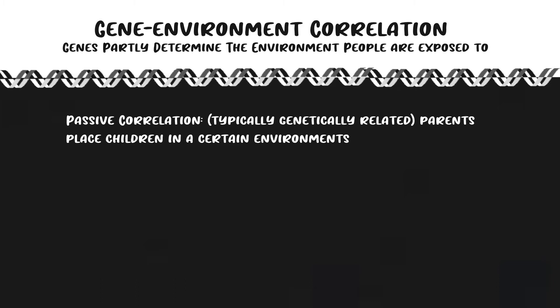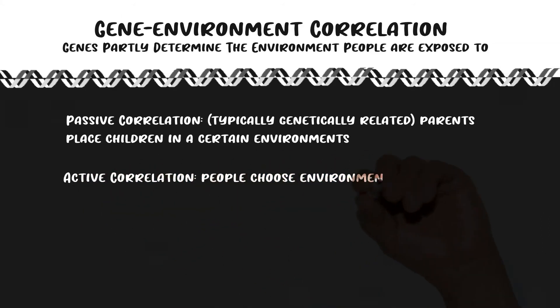And then you have active correlation, and that's that people choose environments influenced by their genotype. So imagine taking a kid who's got a genetic predisposition to psychopathy, and he's got the option of hanging out with friends that are going to be a good influence, like my boys in the math club, or hanging out with hooligans who are going to do shenanigans after school. So that child's likely to choose an environment that's going to reinforce his psychopathic traits.